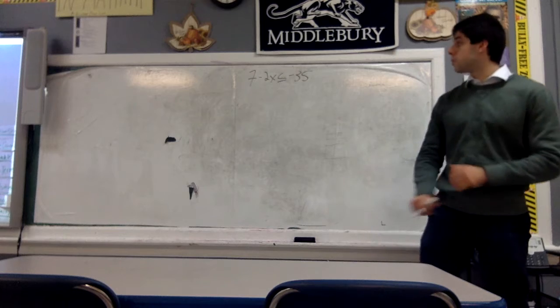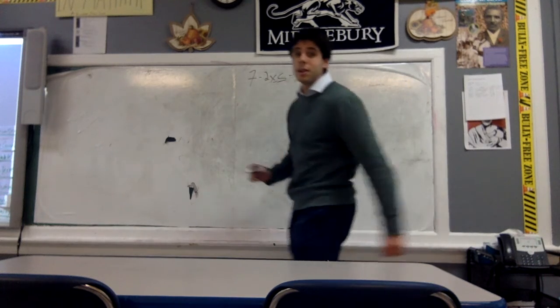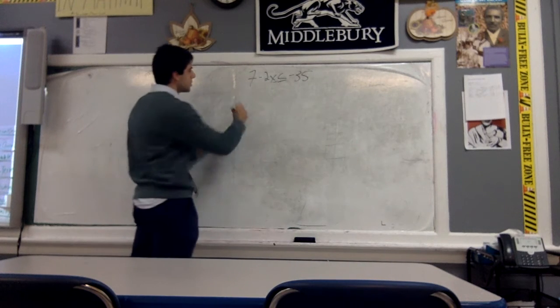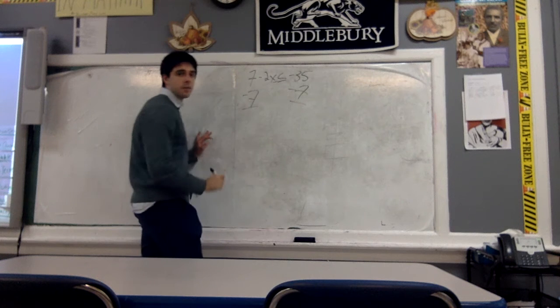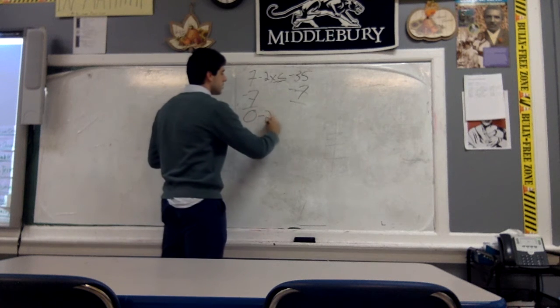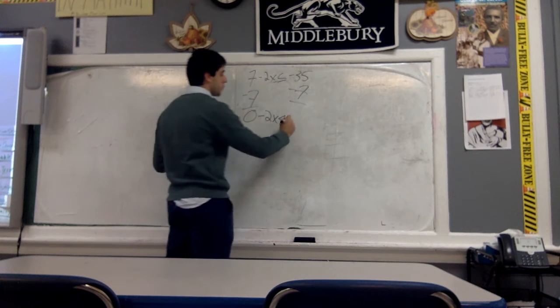So to do this, the first thing we're going to do is isolate for x, so we have to get this constant first. We're going to subtract 7 from both sides of our equation, which is going to give us negative 2x is less than or equal to negative 35 minus 7, which is negative 42.